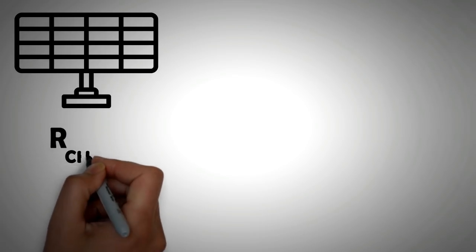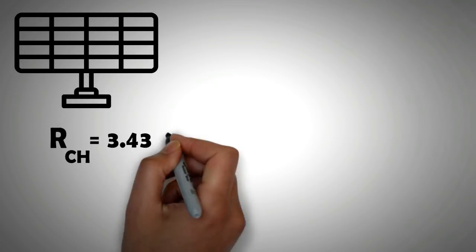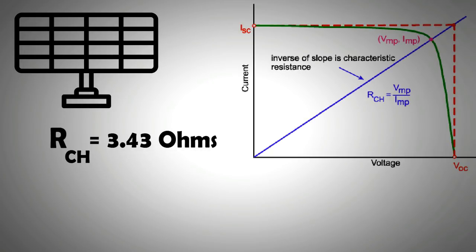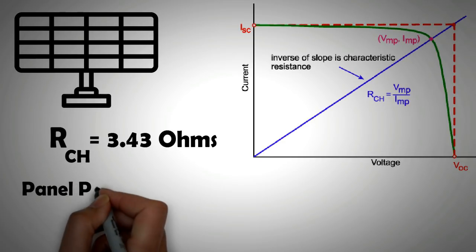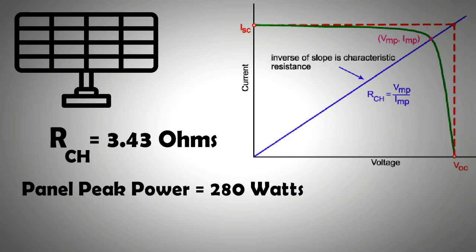So as mentioned before, in this case we have a value of 3.43 ohms. If the load resistance is around 3.43 ohms for this panel, only then we will be able to get the peak power from this panel. This panel is rated at 280 watts, and if we don't match the resistances then we will not be utilizing the panel fully.